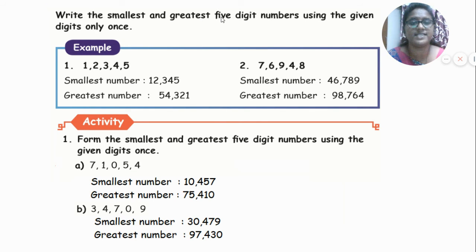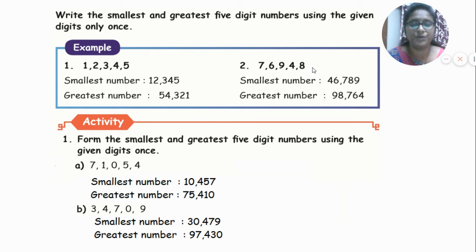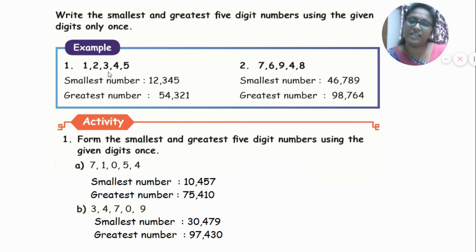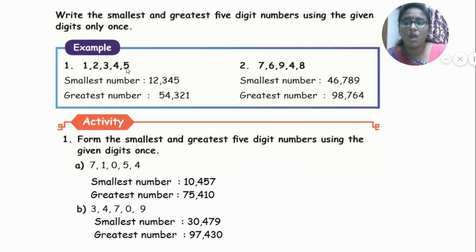Write the smallest and greatest 5-digit numbers using the given digits. Example digits: 1, 2, 3, 4, 5. The number should not be repeated — use each digit only once. For the smallest number, arrange in ascending order: 1, 2, 3, 4, 5 — giving 12,345. For the greatest number, arrange in descending order: 5, 4, 3, 2, 1 — giving 54,321.